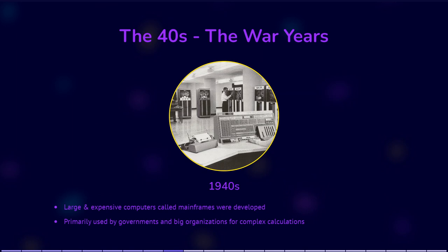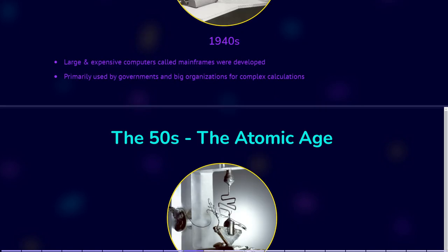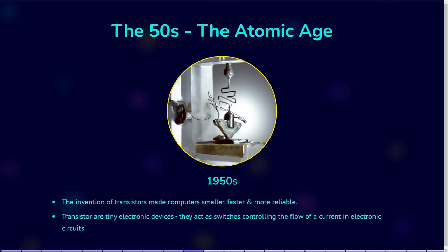During the following decades, computer science accelerated fast. In the 1940s, large and expensive computers called mainframes were developed. The huge machines could sometimes take up a whole room. Mainframes were primarily used by governments and big organizations for complex calculations. In the 1950s, the invention of transistors — a tiny electronic device that can act as a switch controlling the flow of a current in electronic circuits — made computers smaller, faster, and more reliable.